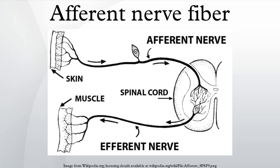Somatosensory receptors include senses such as pain, touch, temperature, itch, and stretch. For example, a specific muscle fiber called an intrafusal muscle fiber is a type of afferent neuron that lies parallel to the extrafusal muscle fibers, thus functioning as a stretch receptor by detecting muscle length.